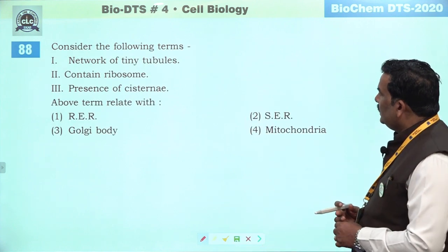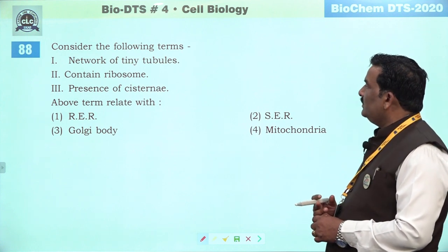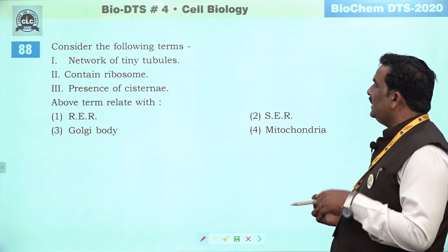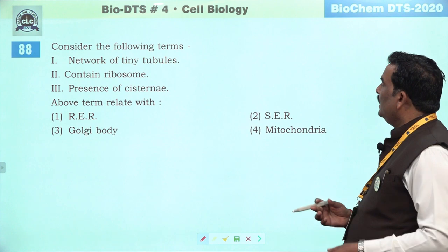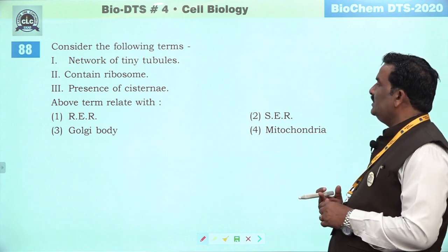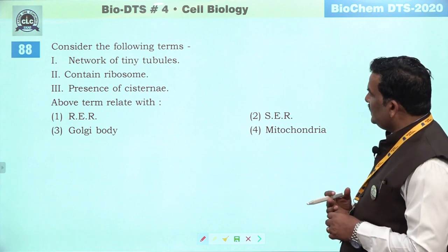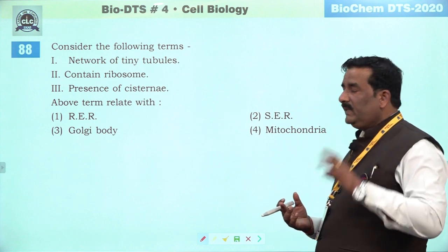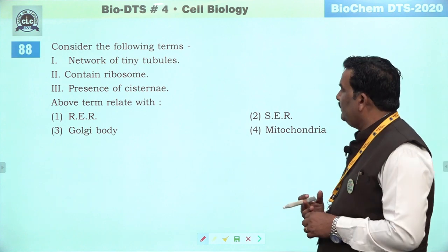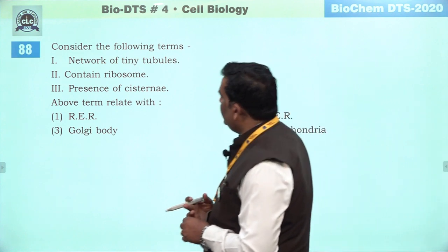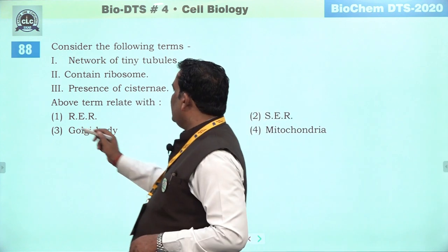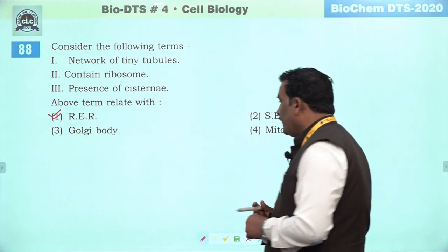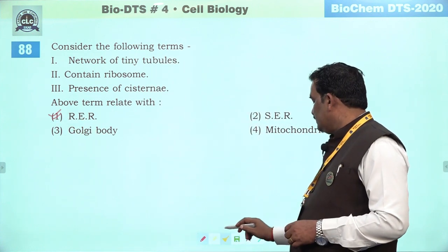Next question: consider the following terms — network of tiny villi, NCRT mein likha hai, contains ribosome — RER ki aur ja raha hai. Presence of cisternae — cisternae Golgi body mein paaye jaate hain plus ER mein bhi paaye jaate hain. RER humare paas better answer hai.